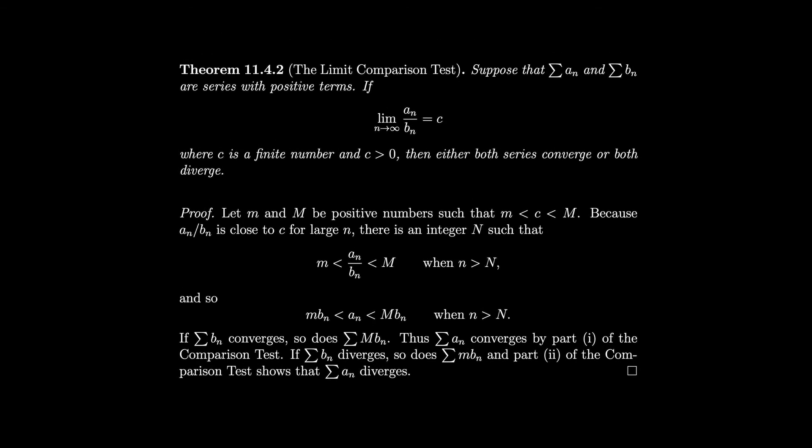Another test we have is the limit comparison test. Sometimes we can't always find a series to compare things to that's smaller when we want something to converge and greater when we want something to diverge. In those cases where we find something to compare but can't exactly get those two conditions, we do a limit comparison where we take the quotient of the terms and see if that limit is some constant. If it's some finite constant then the series are linked and either both converge or both diverge.